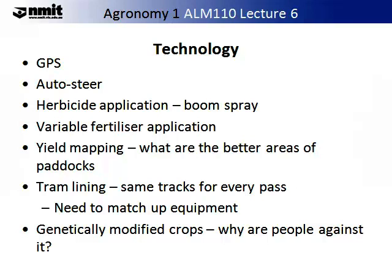Technology and agronomy is advancing at a very rapid rate. Perhaps the most common technology currently used is GPS or Global Positioning Systems — this enables you to locate an area, which is very important for keeping records and for allowing automation of some processes such as the auto steerer. You can have herbicide application via boom sprays, and variable fertiliser application. This is very exciting and does allow sustainable agronomy and sustainable soil management, and once the infrastructure is in place, has significant economic benefits.